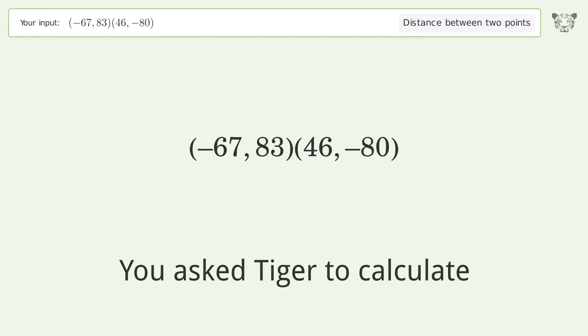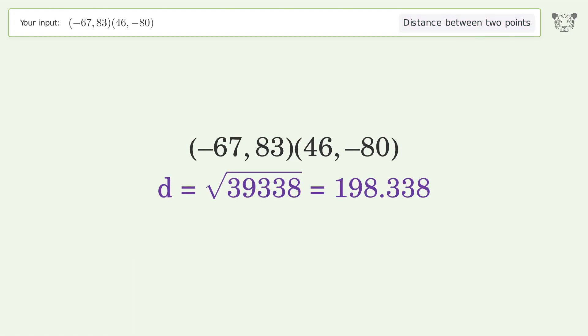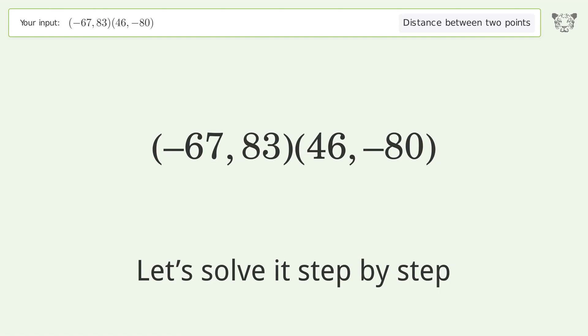You asked Tiger to calculate the distance between two points. The distance between the two points is the square root of 39,338 or 198.338. Let's solve it step by step.